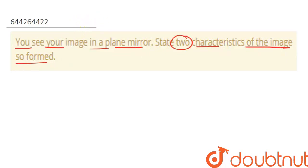Alright, so basically we have two characteristics of the image which is formed in front of a plane mirror. Let's suppose this is our mirror and this is our object.